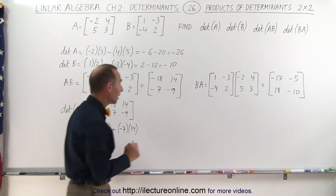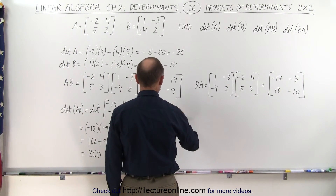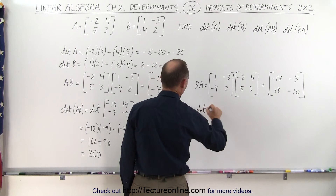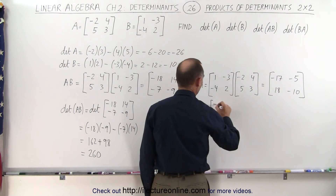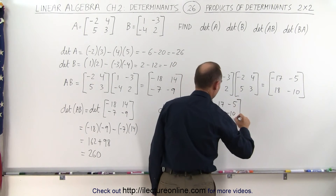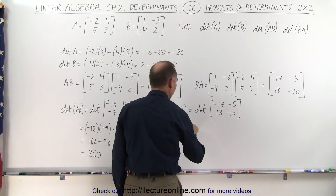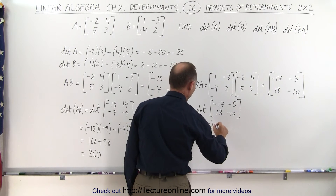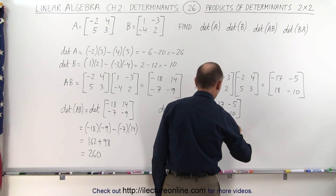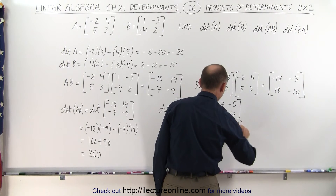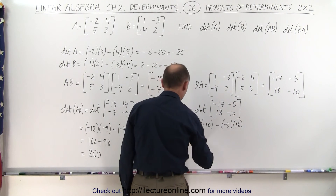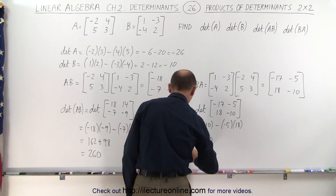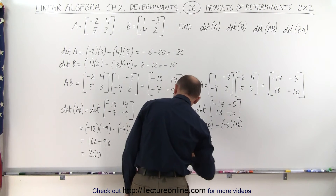Now let's find the determinant of B times A. The determinant of that product matrix — with elements minus 17, minus 5, 18, and minus 10 — equals minus 17 times minus 10, minus the product of minus 5 times 18. That gives us positive 170 plus 90, which turns out to also be exactly 260.